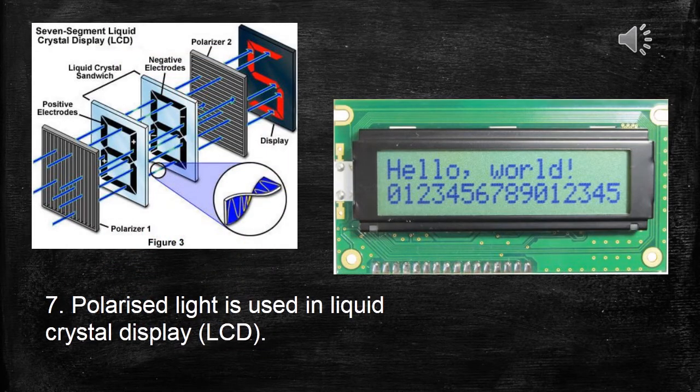Polarized light is used in liquid crystal display, that is shortly called as LCD, which are used in the displays of calculators and also in electronic monitors.